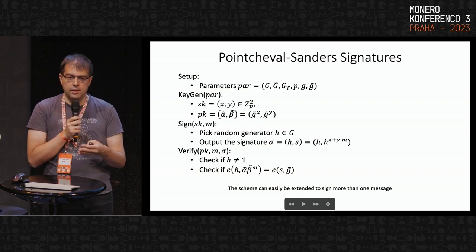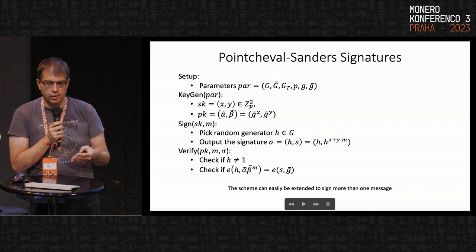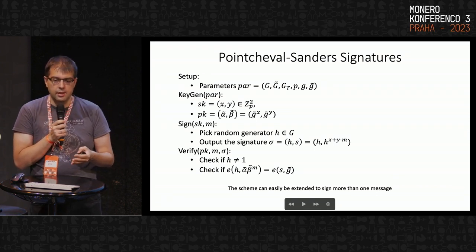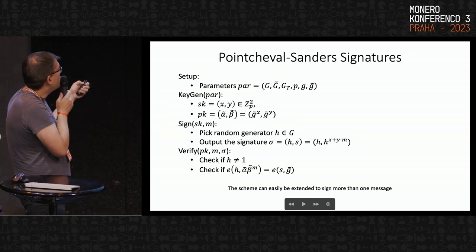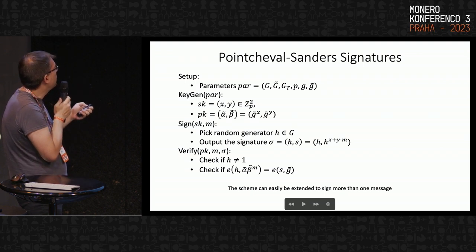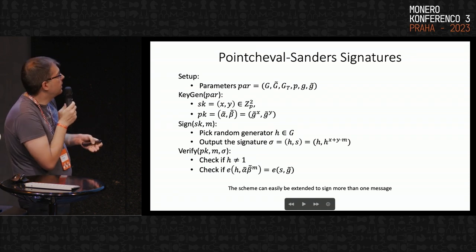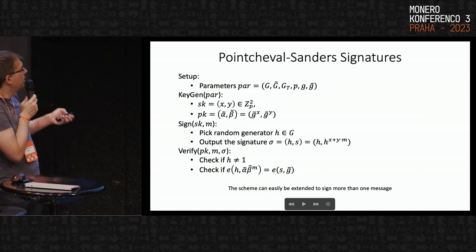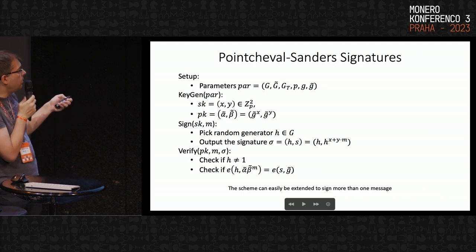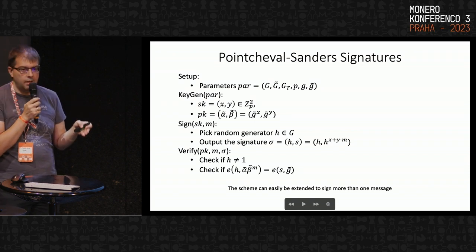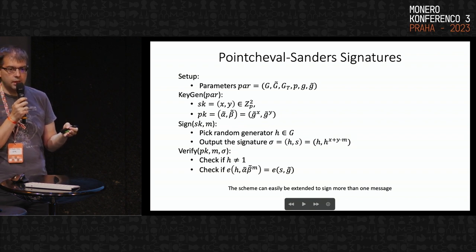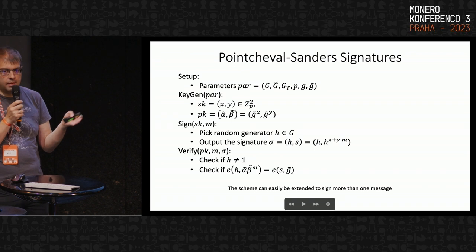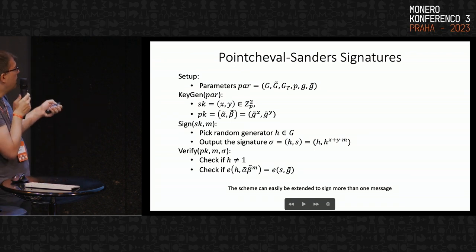There is a setup algorithm that produces a bilinear map specification: the description of the bilinear groups and two generators. Then there is the generation of the public key and the secret key. The secret key consists of two elements in the exponent, and the public key is g to the power of x and g to the power of y. To compute a signature on a message m, we pick a random generator h and perform the computation. I am describing here the single-message version; in practice, we use a version that allows signing several messages.